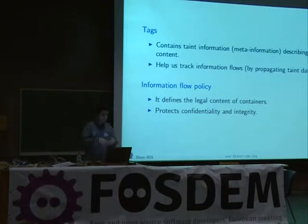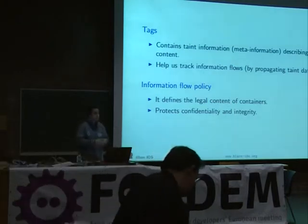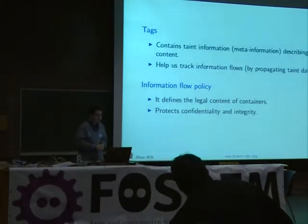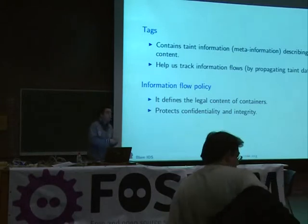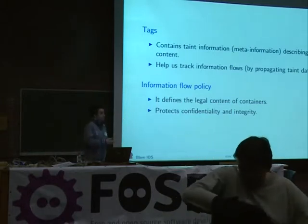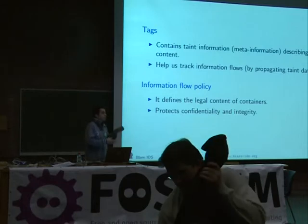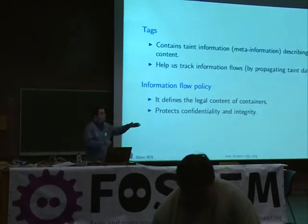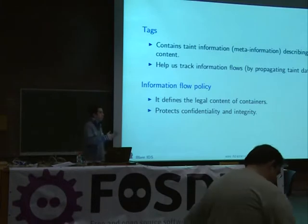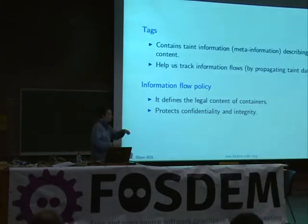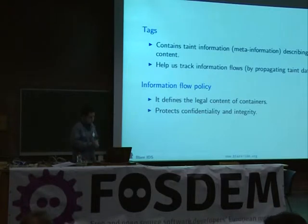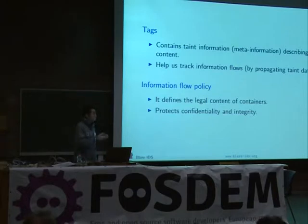To do that, we need what we call information tags, which contain metadata — not the information itself, but information about the information, telling you this information is of kind A or kind B. This is what you propagate over the lifetime of the system to follow information flows. If you want a policy on these flows, you need a way to specify it: this container should be able to contain information A and B, but we never want to see type C in that container, whereas another container can contain any kind of information. You can set up a policy to protect the confidentiality and integrity of the system.